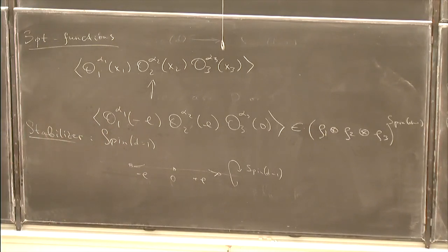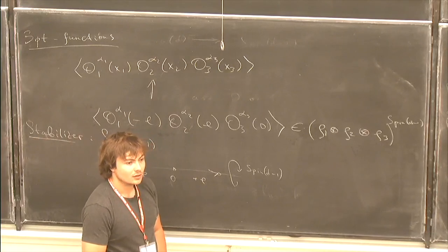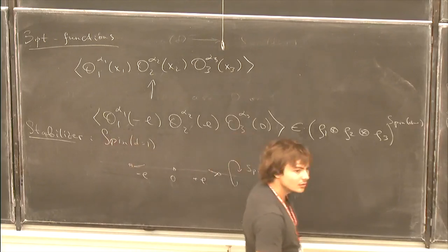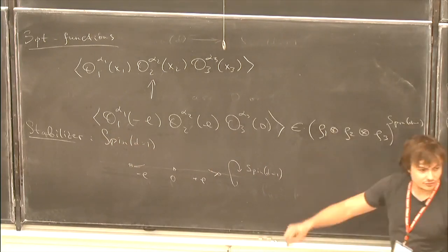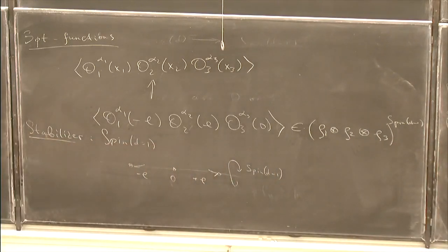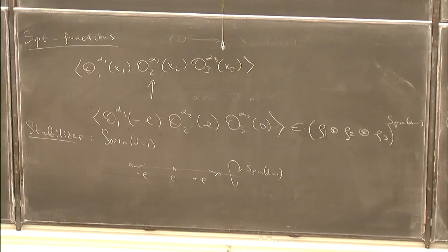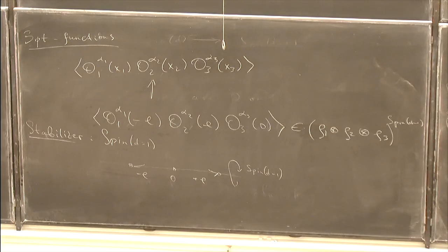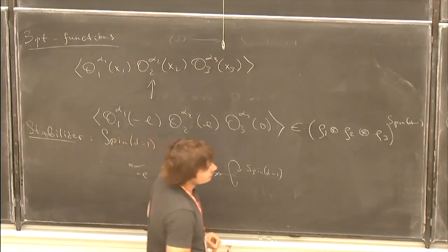Another rule which can be found in the literature is that three-point tensor structures are in one-to-one correspondence with traceless symmetric tensors appearing in this tensor product, because as I explained, only traceless symmetric tensors reduce to scalars, and each traceless symmetric tensor reduces to precisely one scalar under Spin(D-1). Are there any questions about three-point functions? For two-point functions, the simplest way is to put one point at zero and the other at infinity — then SO(1,1) is simply generated by dilatations.